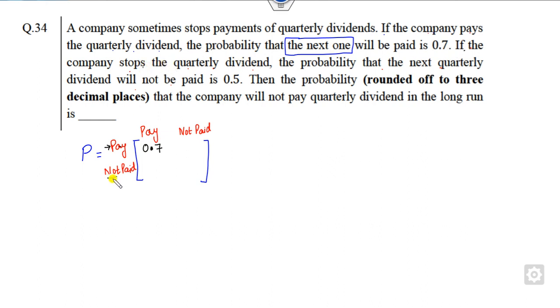Then the probability in the next quarterly will not be paid is my 0.5. Not paid, not paid is 0.5. And we know that it's a TPM. So the sum of each row is 1. So it must be 0.3 and it must be 0.5.